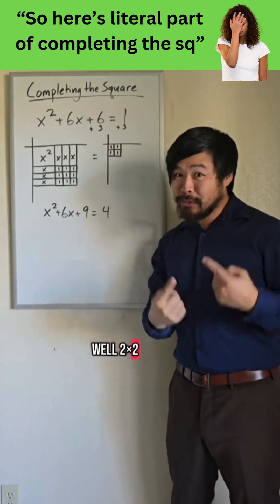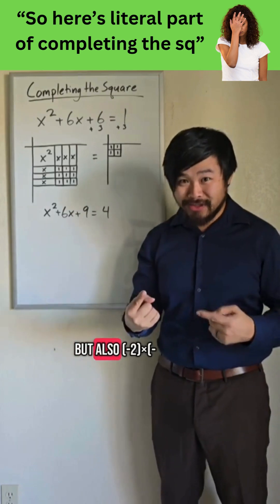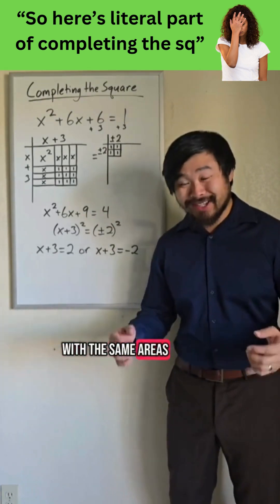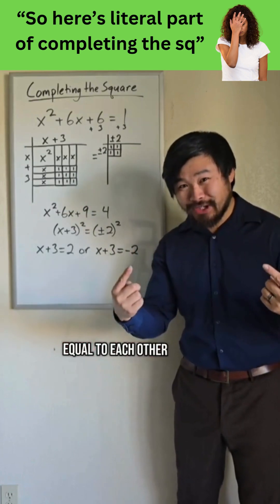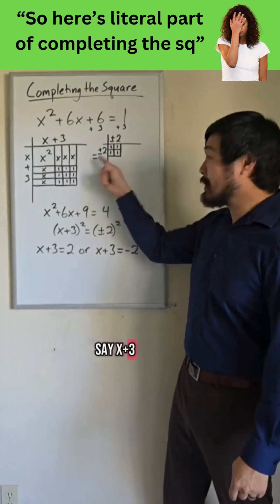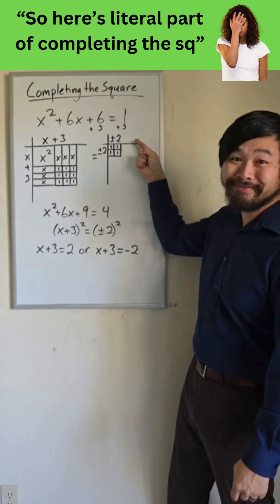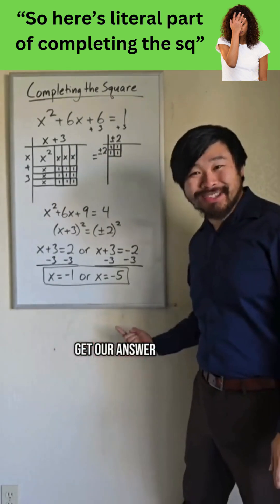Well, 2 times 2 equals 4, but also negative 2 times negative 2 equals 4. So because we have 2 squares with the same areas, we can set their side lengths equal to each other. So we can say x plus 3 equals 2, or x plus 3 equals negative 2. And we can isolate x to get our answer.